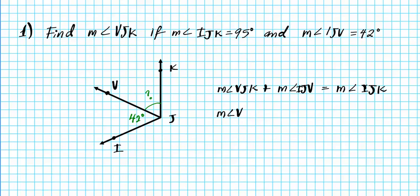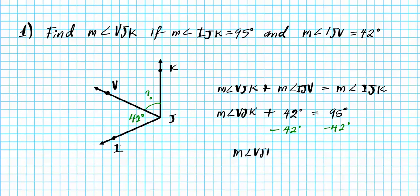The measure of angle VJK stays as is because that is what we are looking for — it is unknown. The measure of angle IJV is 42 degrees, and the measure of angle IJK is 95 degrees. We subtract 42 degrees from both sides of the equation, and that leaves us with the measure of angle VJK being equal to 53 degrees. There goes your final answer.